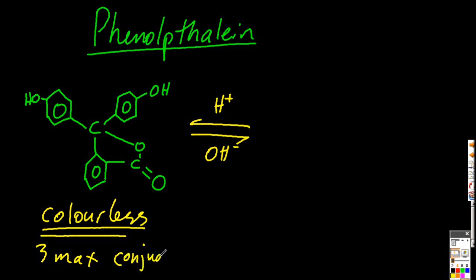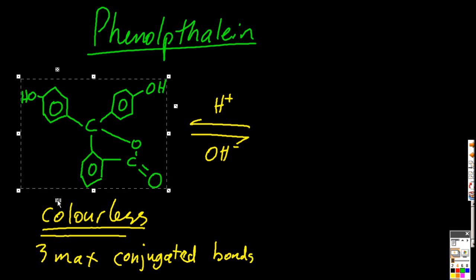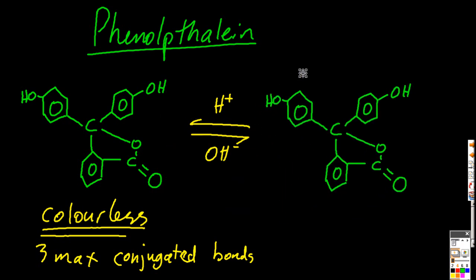It absorbs in the UV. It has three or less conjugate double bonds, and it absorbs in the UV. And I can't see UV, so it doesn't matter to me. It just looks colorless. All the light passes straight through it. So that's the acid. If phenolphthalein is in acid,